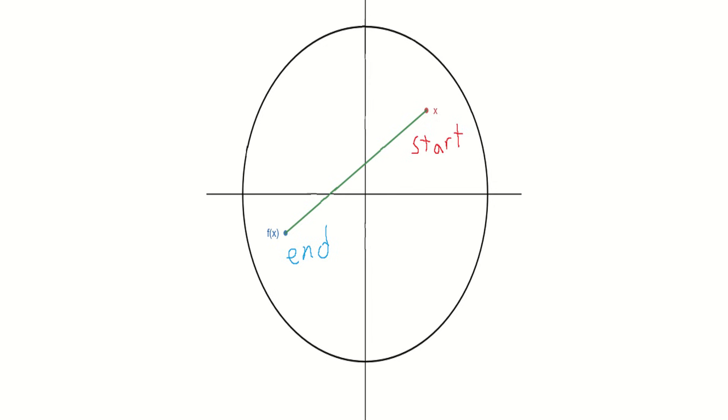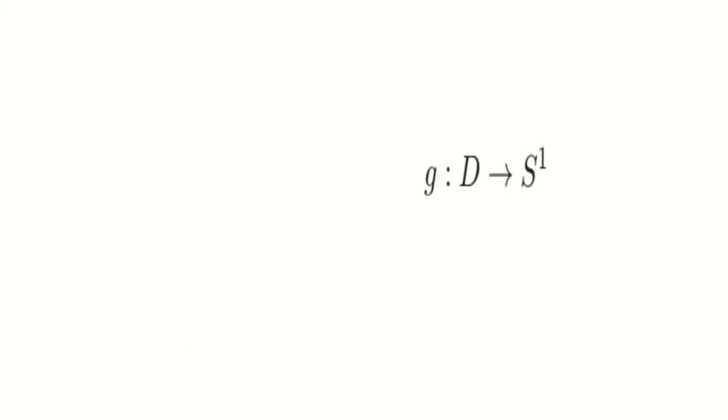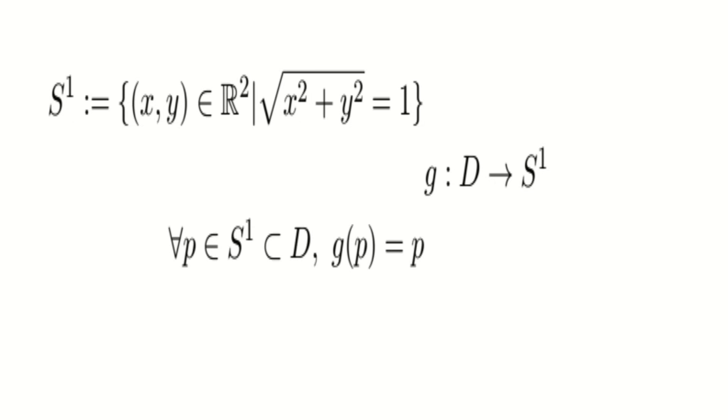For each point on the disk, we can draw a line segment through its before and after image. Now, this line segment will always intersect the boundary of the disk, also known as the circle. We will now construct a new function, call it G for creativity, that will send each point on the circle to the place where its line segment hits the circle. If the point starts on the circle, we keep it there.